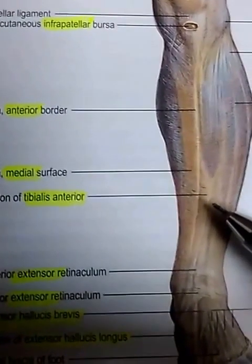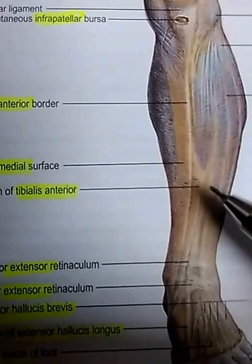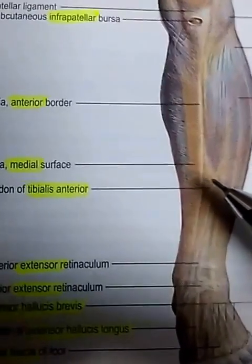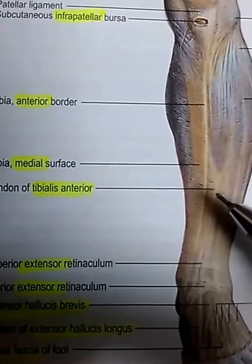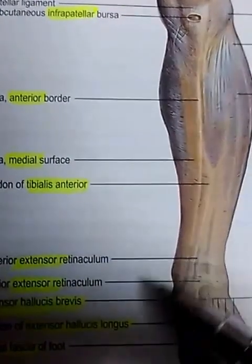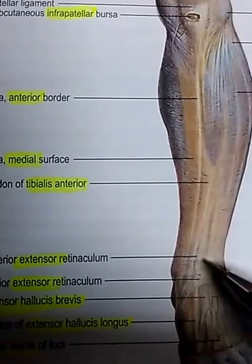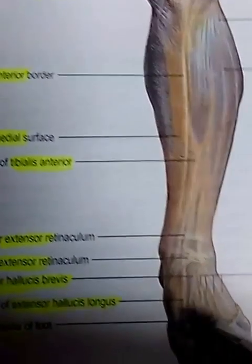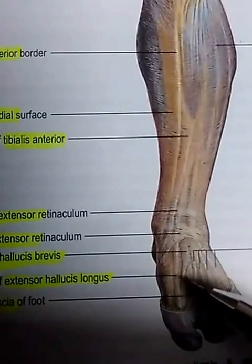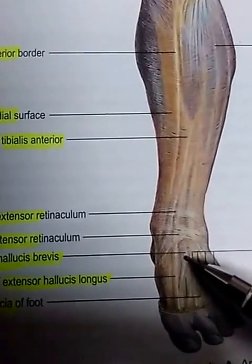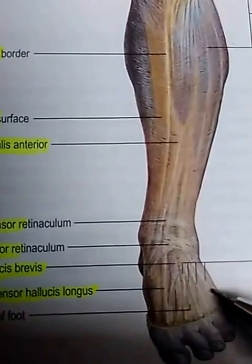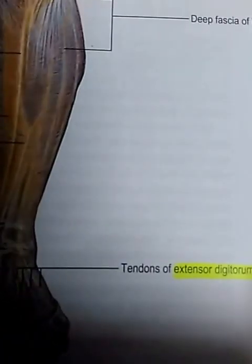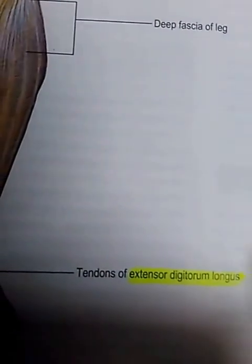Here you can see the tendon of tibialis anterior, slightly lateral to the anterior border of the tibia. Above, the superior extensor retinaculum, and below, the inferior extensor retinaculum. This long tendon is extensor hallucis longus, next is extensor hallucis brevis, and these four together are extensor digitorum longus.